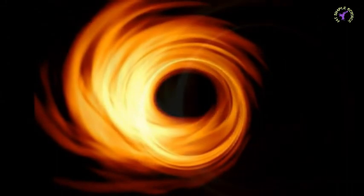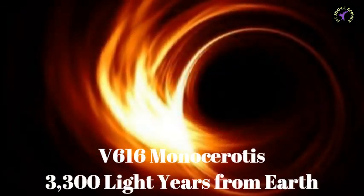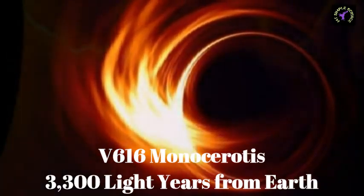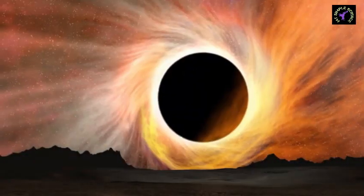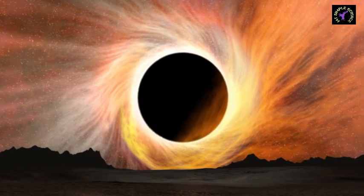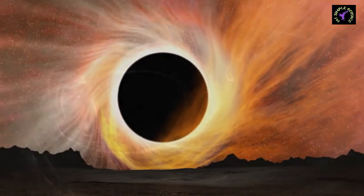The supermassive black hole named V616 Monocerotis is the closest to our Earth at a distance of just 3,300 light years. Milky Way is populated with this particular type of black holes.